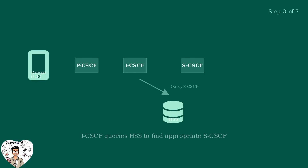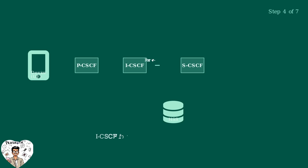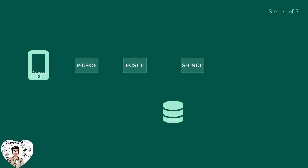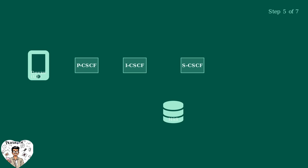Step three: the ICSCF needs to find the right SCSCF to handle this user, so it queries the HSS database to determine which SCSCF should serve this particular user. Step four: after receiving the SCSCF information from the HSS, the ICSCF forwards the register request to the appropriate SCSCF that will handle this user's session. Step five: the SCSCF receives the registration request but needs to authenticate the user first. It sends a 401 Unauthorized response with an authentication challenge back to the device.